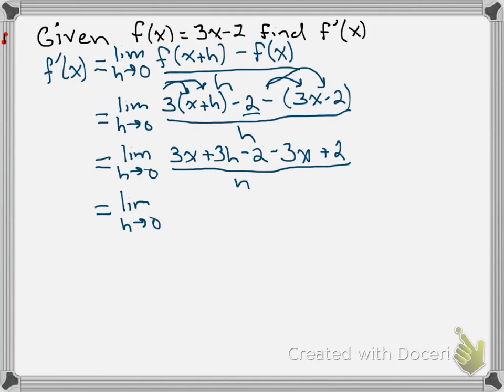If I go back to my line before, notice that the 3x's are going to cancel, as are the negative 2 and positive 2. So I get down to 3h over h.